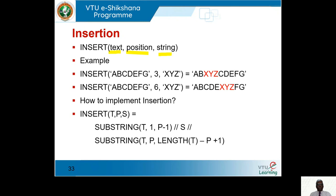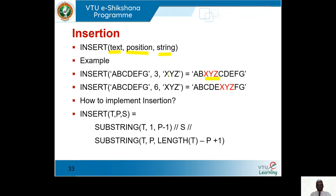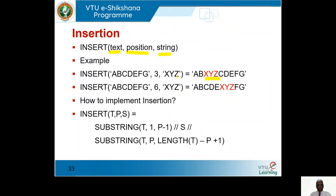Position is where the new string is to be inserted. For example, if the given string is A, B, C, D, E, F, G — from the third position onwards, the new string X, Y, Z must be inserted. Similarly, at position 6, the new string has to be inserted. Whatever the length of the string to be inserted, it should sit after the position specified in the function insert.